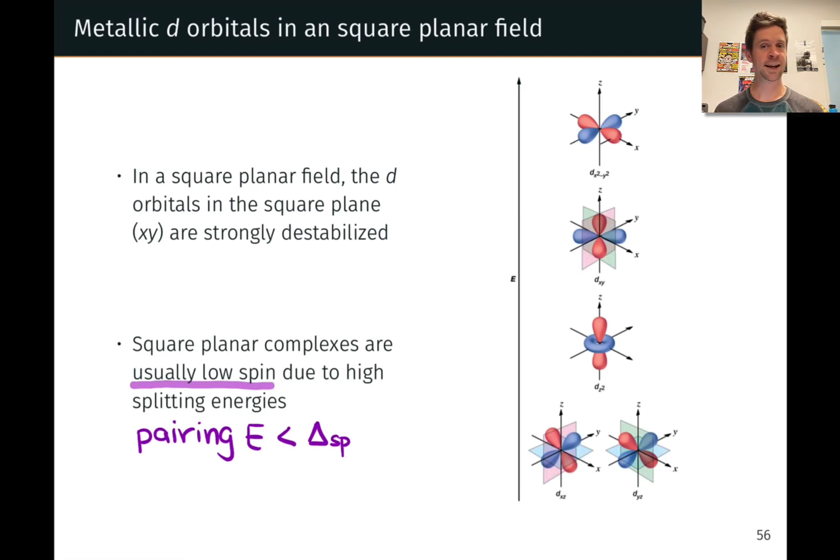Square planar is yet another four-coordinate geometry. And in a square planar situation, we actually get four different energy levels. It's not just two different distinct energy levels.